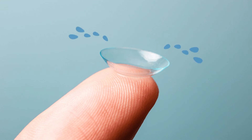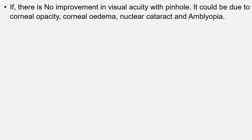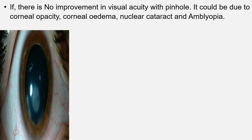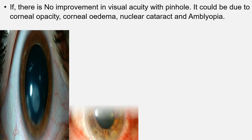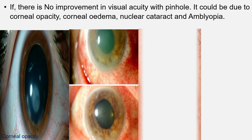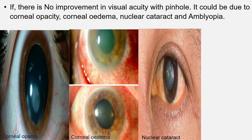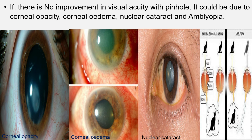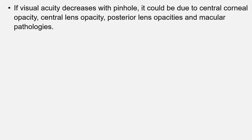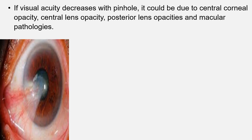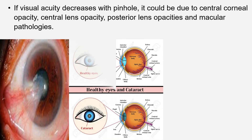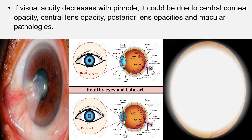If there is no improvement in visual acuity with pinhole, it could be due to corneal opacity, corneal edema, nuclear cataract, and amblyopia. If visual acuity decreases with pinhole, it could be due to central corneal opacity, central lens opacity, posterior lens opacities, and macular pathologies.